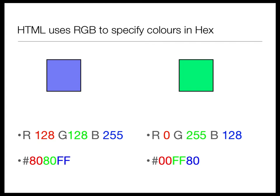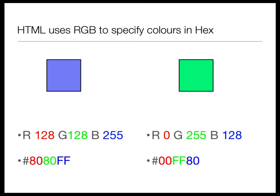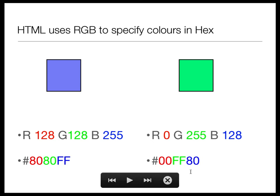In HTML you may have seen RGB used to specify colors. For example, red value 128, green value 128, blue value 255 — in hexadecimal that's 8080FF. Decimal zero is hex 00, decimal 255 is hex FF, decimal 128 is hex 80. You might have seen colors specified this way in your HTML module.